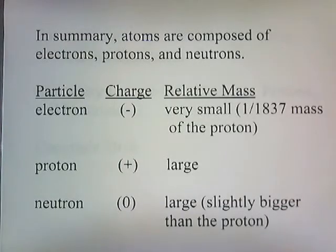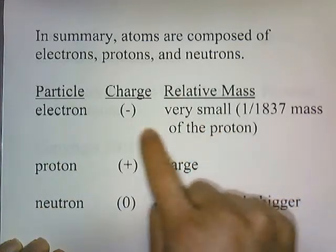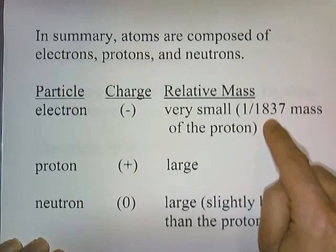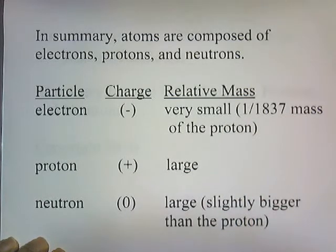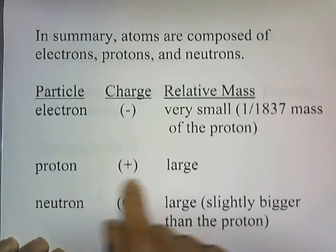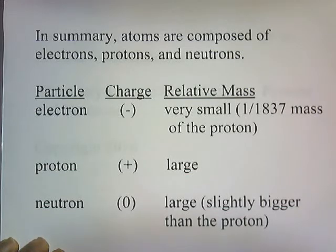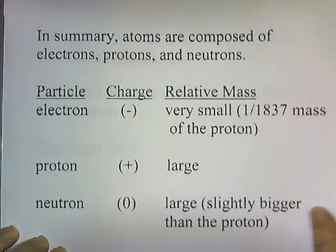In summary, atoms are composed of electrons, protons, and neutrons. The electron has a negative charge and is very small — 1/1837th the mass of a proton. The proton has a positive charge and is large. The neutron has no charge, is large, and its mass is slightly larger than that of the proton.